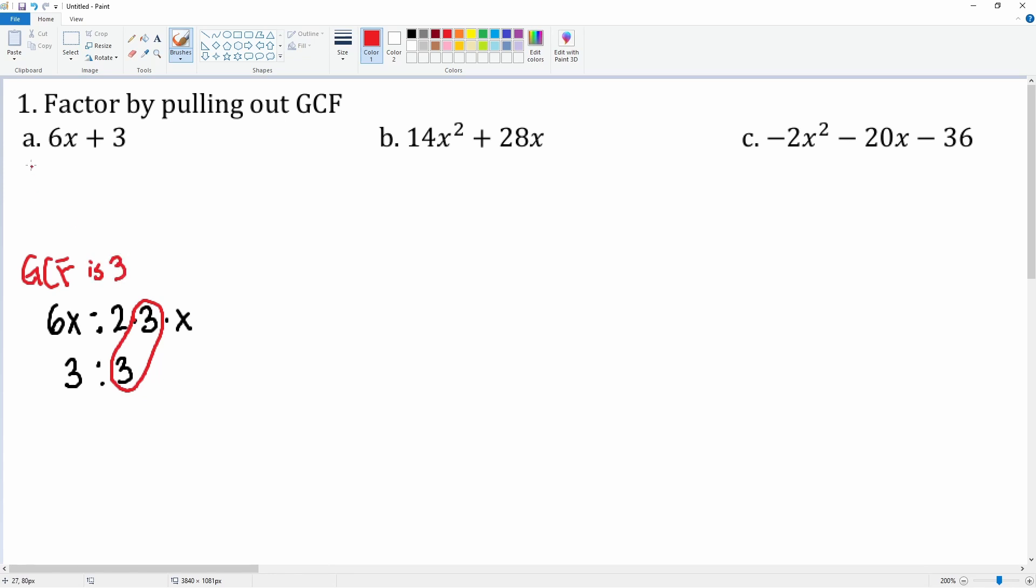The GCF here is 3. We put 3 outside the parentheses, and inside we put what's left: 2x from the 6x, plus 1 from the 3. That's how you pull out the GCF.